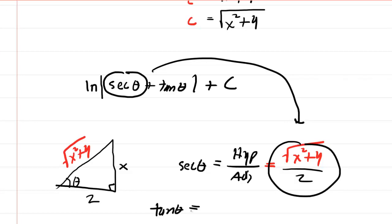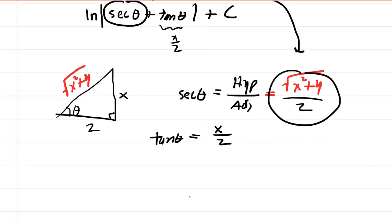And then similarly, the tangent of theta, well, that's just opposite over adjacent, so that would be x over 2. So this right here will be your x over 2. So putting this all together, we're going to have as our final answer the natural log of the absolute value, the square root of x squared plus 4, all over 2, plus our tan theta, which was x over 2.